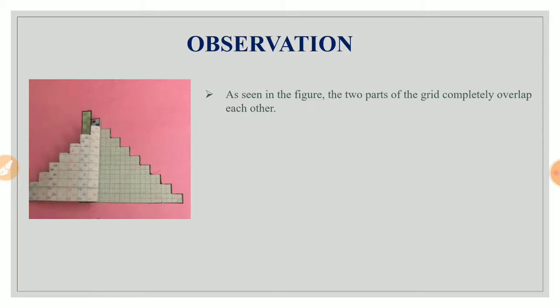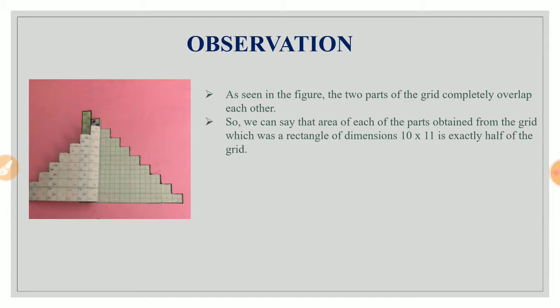What is the observation? I get that the two parts in the grid completely overlap each other. So we can say that the area of each part obtained from the grid which was a rectangle of dimension 10 into 11 is exactly half of the grid. That means that the sum of 1 plus 2 plus 3 up till 10 is equal to half of 10 into 11.